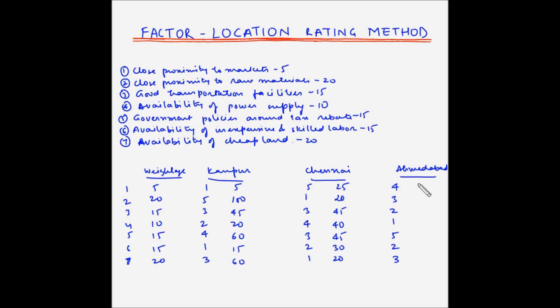And for Ahmedabad: 5 times 4 is 20, 20 times 3 is 60, 15 times 2 is 30, 10 times 1 is 10, 15 times 5 is 75, 15 times 2 is 30, and 20 times 3 is 60. Now we have to add up these scores for each of the locations.